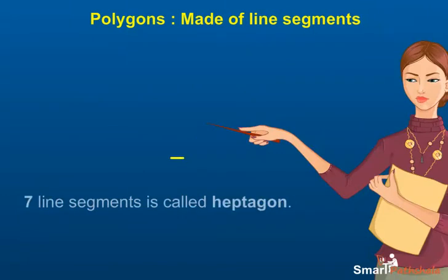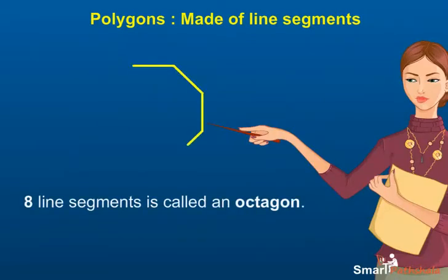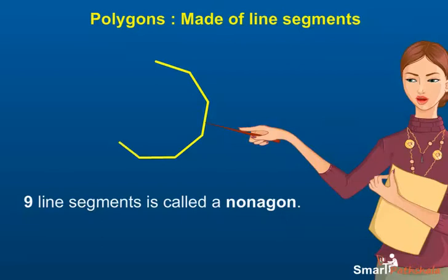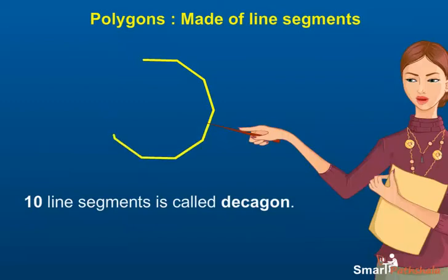A polygon with six line segments is called a hexagon. A polygon with seven line segments is called a heptagon. A polygon with eight line segments is called an octagon. A polygon with nine line segments is called a nonagon. A polygon with ten line segments is called a decagon.